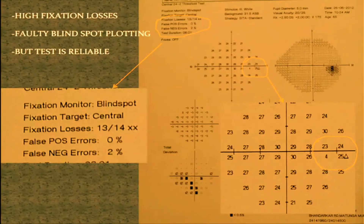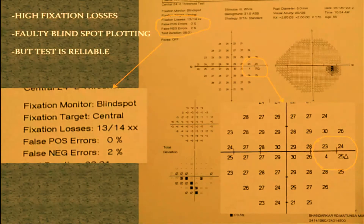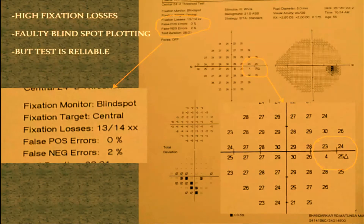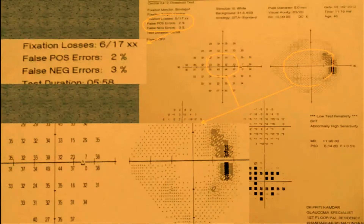But if you get a high fixation loss — say 13 out of 14, almost 100% — that does not mean it's an unreliable field. Look: false positives are very good, false negatives are excellent. When the patient is inattentive during blind spot mapping, the blind spot which should be at 15 degrees is plotted in a different way. Every time the real blind spot is ignored, and this is one condition where faulty blind spot plotting gives 100% fixation losses — but this field is perfectly reliable.